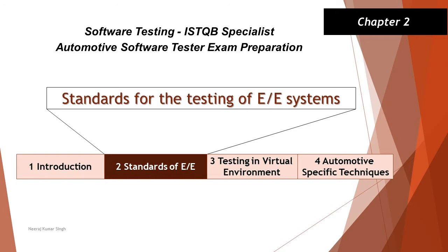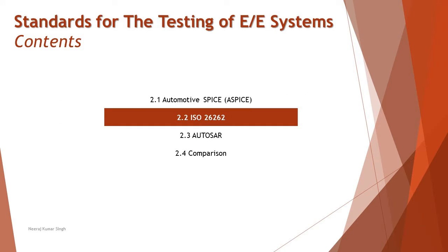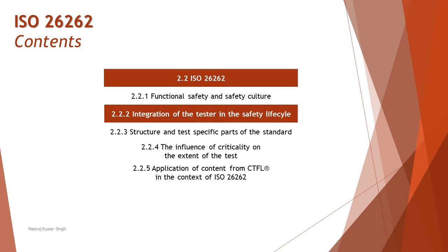Hello friends and greetings for the day. Welcome back to another tutorial on ISTQB Specialist Automotive Software Tester. We are in chapter 2 — Standards of E&E — and we are into section 2.2 ISO 26262. As part of this tutorial we are getting into the next segment of this chapter: 2.2.2, Integration of the Tester in the Safety Life Cycle.